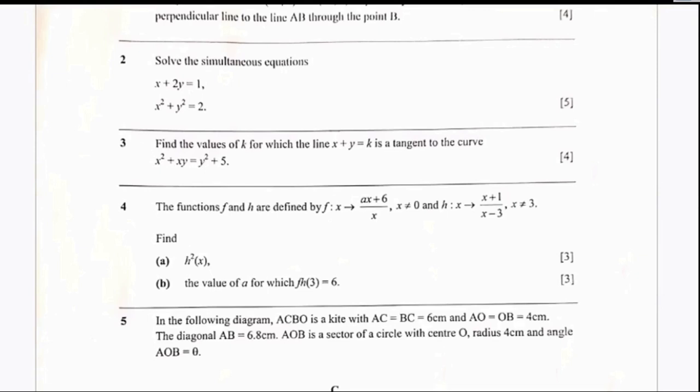Part A asks us to find h squared of x, and part B asks us to find the value of a for which f(h(3)) = 6. That is the whole question.